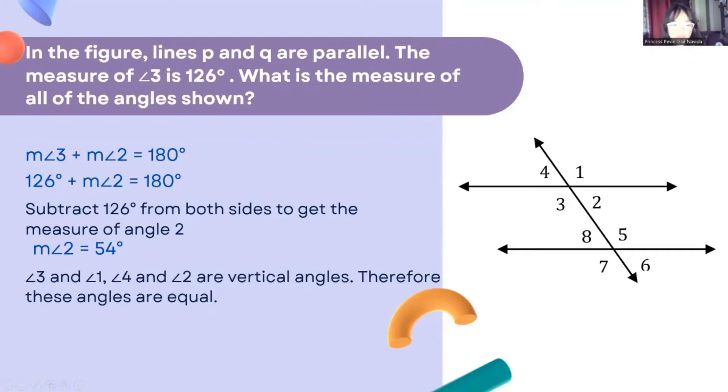Angle 3 and angle 1, angle 4 and angle 2 are vertical angles. Therefore, these angles are equal.